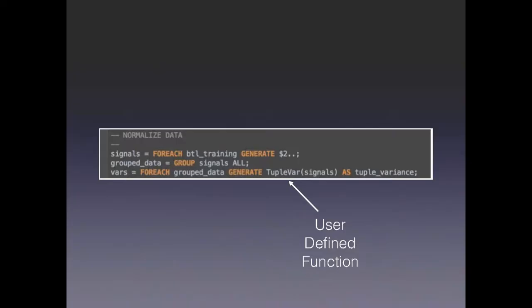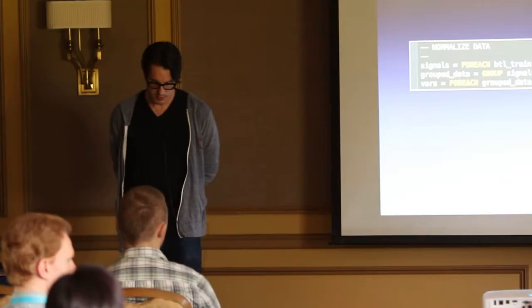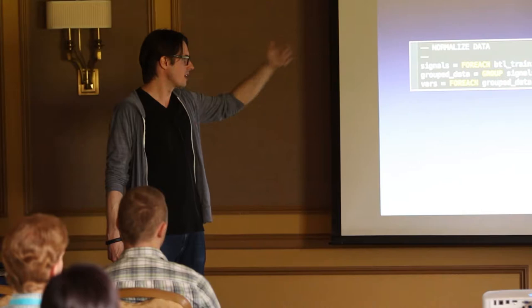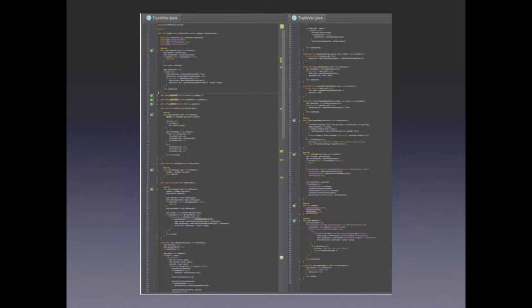A big thing for us was things a language can't do can be done in user defined functions. You can write a function in Java or Python or Ruby and spin your code out to it. Plus, it has this little pig-wearing-overalls logo. Here's an example of a very simple pig query. This is just data normalization. We have a model called BTL. We're going to pull in a bunch of signals, group them together, generate some tuple variables and spit it out the other end.